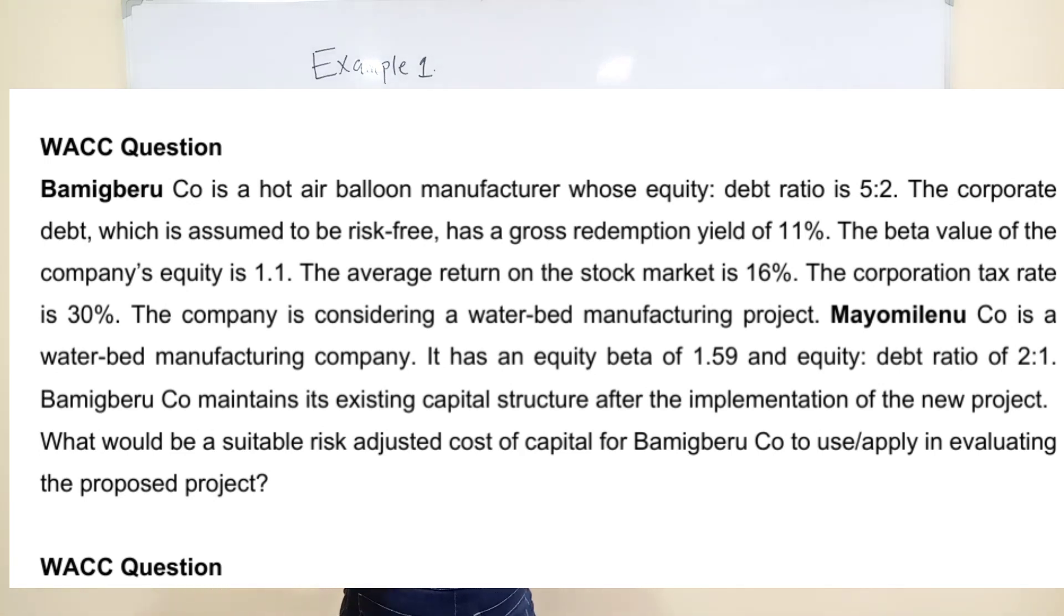Mayonel Epo Co. is a waterbed manufacturing company. It has an equity beta of 1.59 and equity debt ratio of 2:1. Bargain Very Poor maintains the existing capital structure after the implementation of the new project. What would be a suitable risk-adjusted cost of capital for Bargain Very Poor to use in evaluating the proposed project?